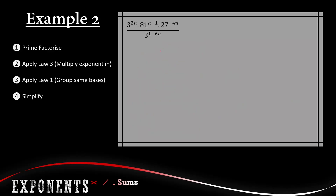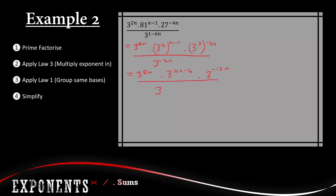For example two, we start by prime factorizing. 3 to the power of 2n stays, then 4 to the power of n minus 1 becomes 3 cubed to the power of negative 4n, and all over 3 to the power of 1 minus 6n. Getting rid of the brackets gives: 3 to the power of 2n, times 3 to the power of 4n minus 4, times 3 to the power of negative 12n, all over 3 to the power of 1 minus 6n. In this case we only have base 3.